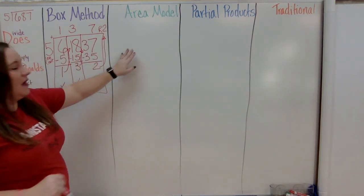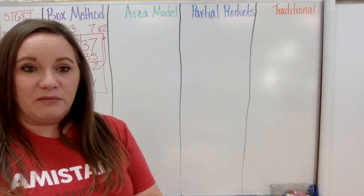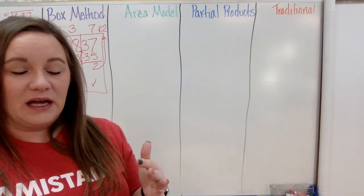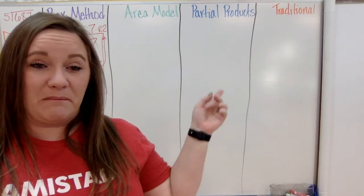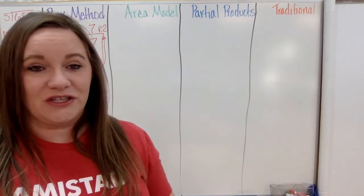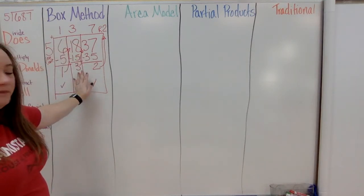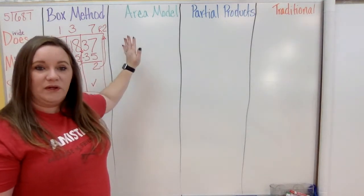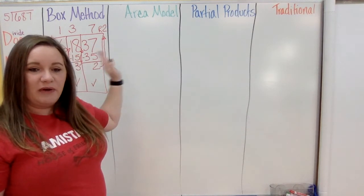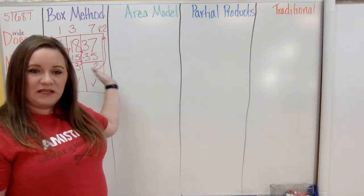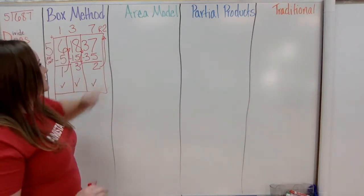Now let's move on to the area model. The area model also uses a box, but it places more focus on place value rather than staying in your column. Some teachers call the area model and box method the same thing, but they are actually two different methods. Box method makes you focus on a column, whereas area model focuses on place value.